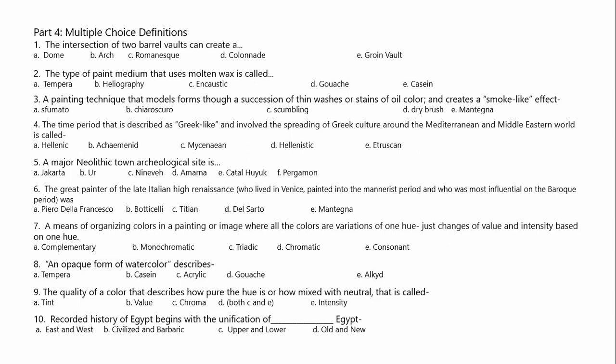All the other artists don't meet all of those criteria — most of them don't meet any of those criteria. A means of organizing colors in a painting or image where all the colors are variations of one hue — that is B, monochromatic. An opaque form of watercolor describes D, gouache.